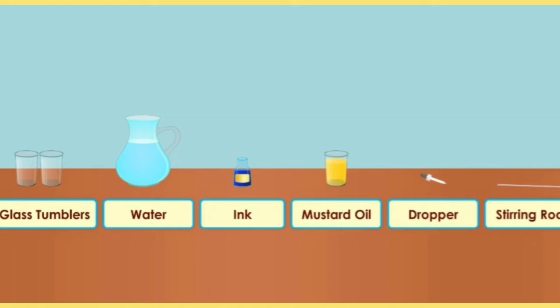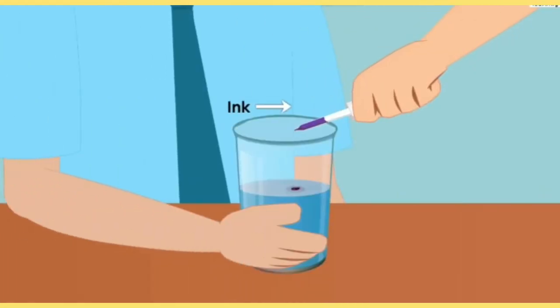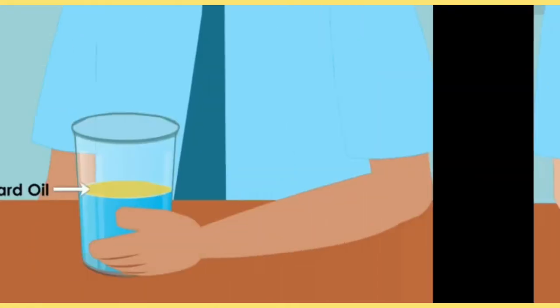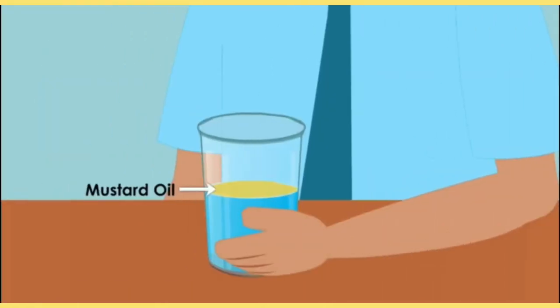For the experiment you need: 2 glasses, water, ink and mustard oil, a dropper, and a stirring rod. Then in one beaker you need to add ink to the water, and in the other beaker you need to add mustard oil.